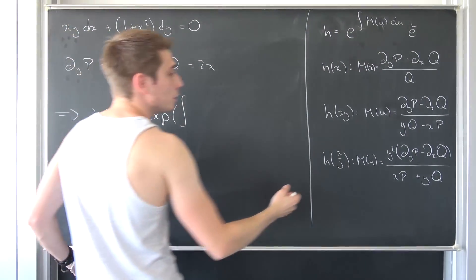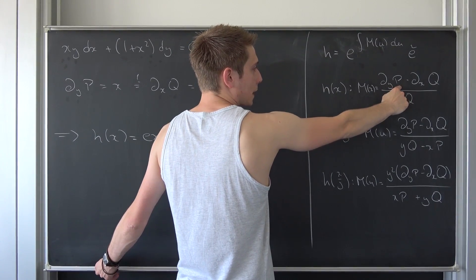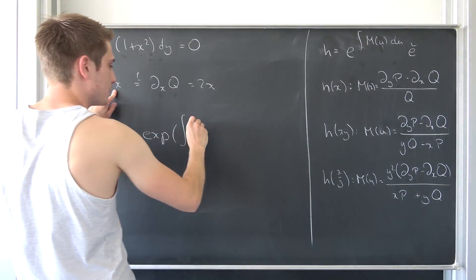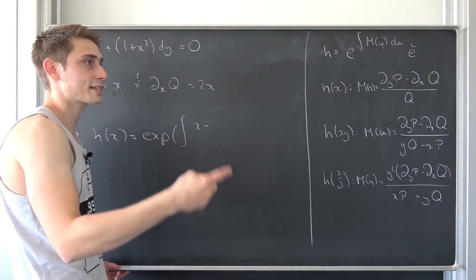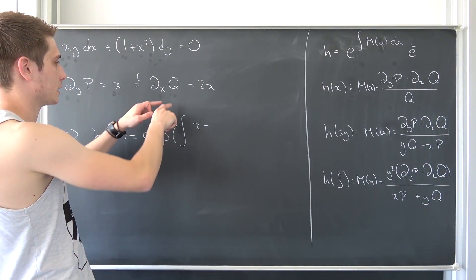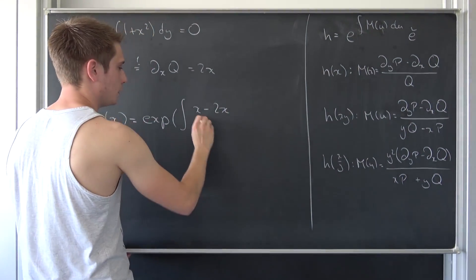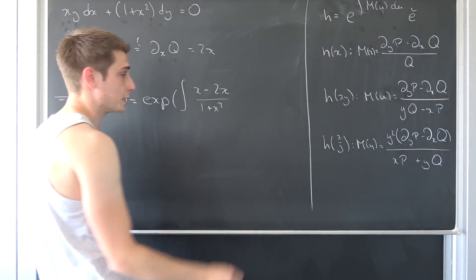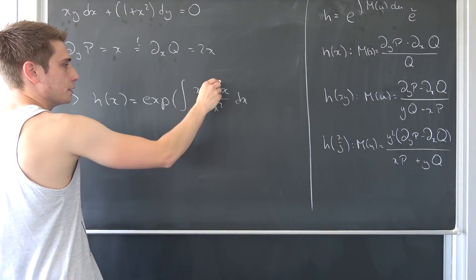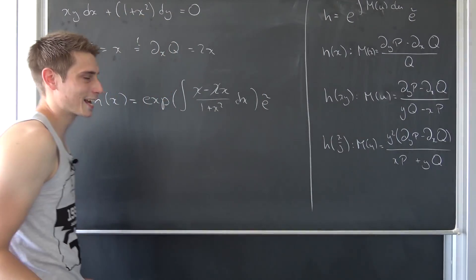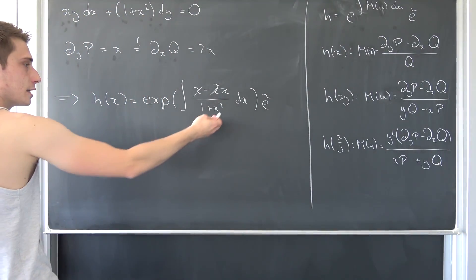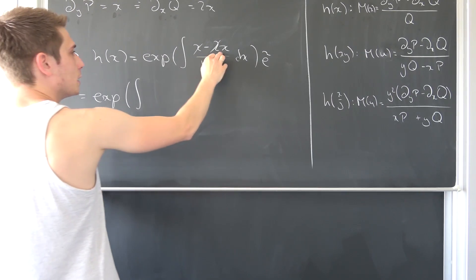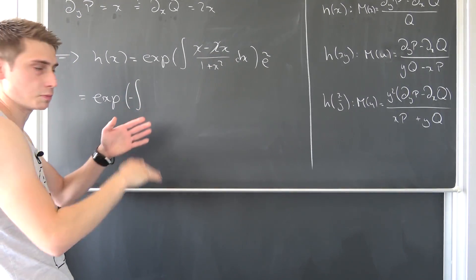So we are going to have the integral, integrating with respect to x. ∂P/∂y is nothing but x, minus ∂Q/∂x which is 2x, over our Q which is nothing but 1 plus x squared, integrated with respect to x. This simplifies — the x terms give us a negative, so we get the exponential of the integral of negative 2x over (1 + x²) with respect to x.